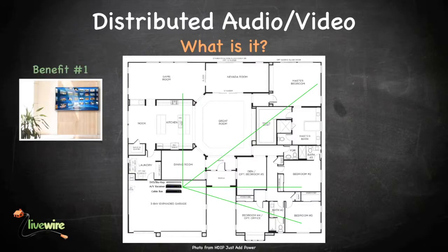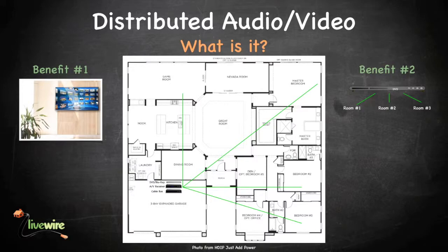First, it helps to make things look more organized — there aren't multiple cables coming down from the display in each room. Second, it allows a source component to be used in multiple rooms. Instead of having to buy a DVD player for each TV in the house, one DVD player could be used for all of the TVs. This can save some money.